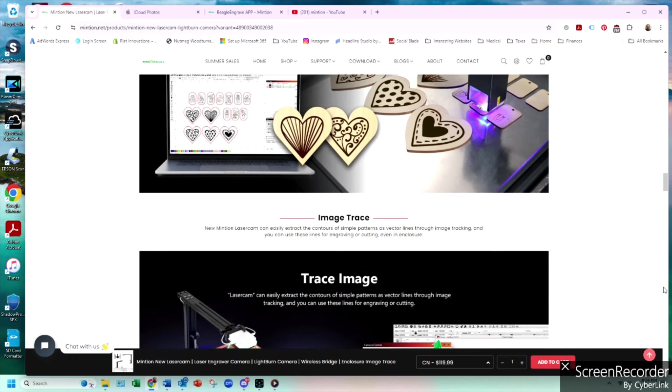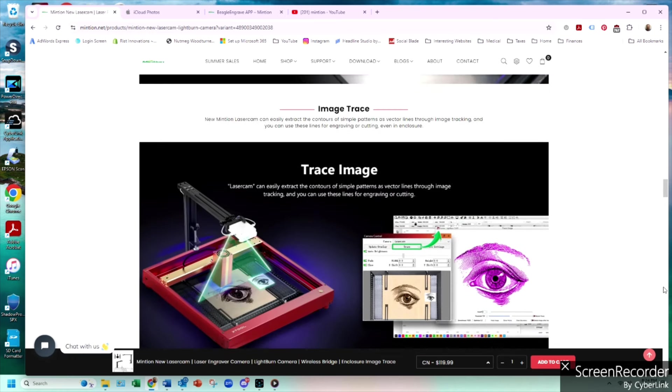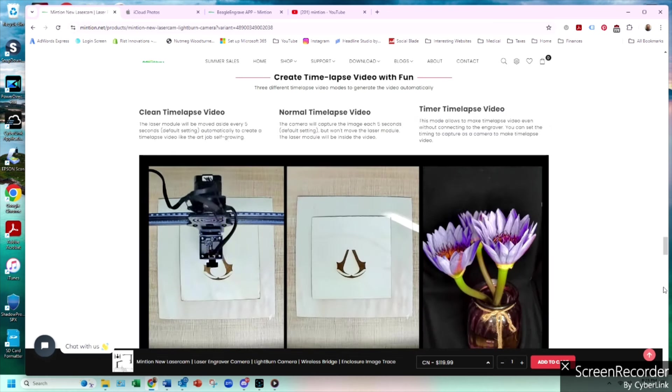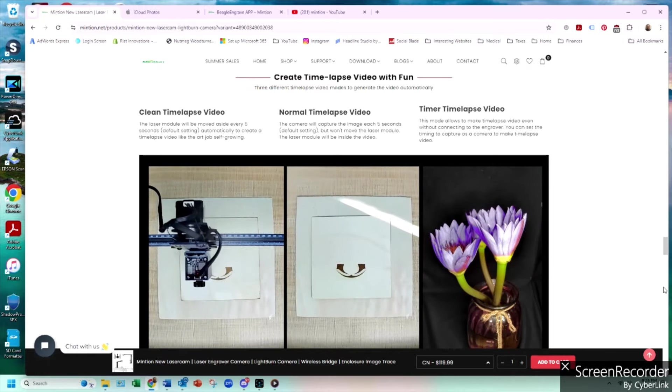The camera also has a tracing function via the Lightburn software that allows you to copy a physical object in the work area and paste the image onto your work piece. You can also automatically create time lapses in two modes, normal and clean.